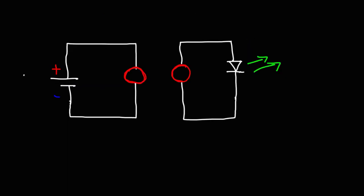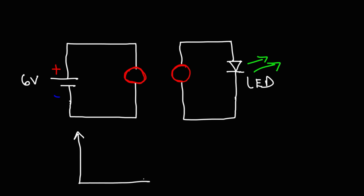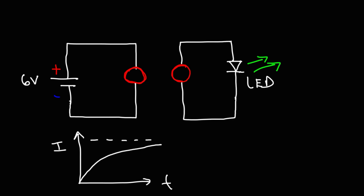Consider this circuit. On the left, we have a 6-volt battery attached to a coil of wire, and there is another circuit with a coil of wire and a green LED. Once you connect the battery to the circuit on the left, this is what's going to happen. On a current-time graph, the current doesn't instantly go from zero to its maximum value. In the presence of an inductor, it increases gradually — not instantaneously.